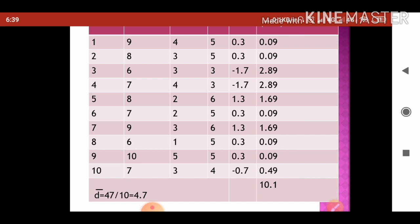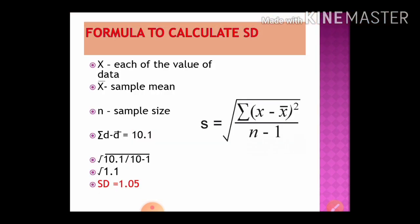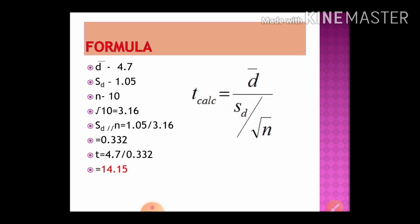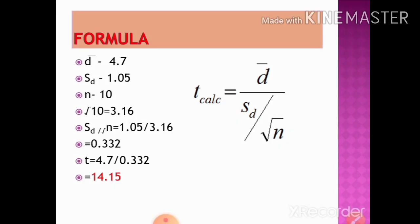We now have all values needed to calculate SD. Substituting into the formula: SD equals the square root of sigma(d minus d-bar) squared divided by (n minus 1) — that is, the square root of 10.1 divided by 9, which gives the square root of approximately 1.12, coming to around 1.05. Substituting all values into the t-test formula, we get t equal to 14.15.